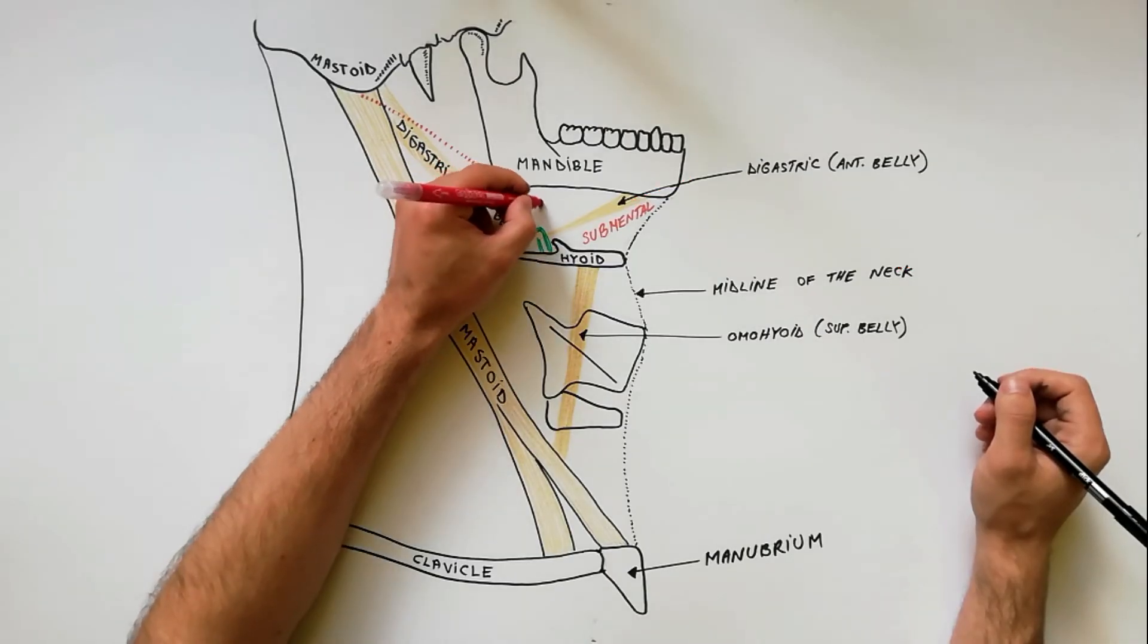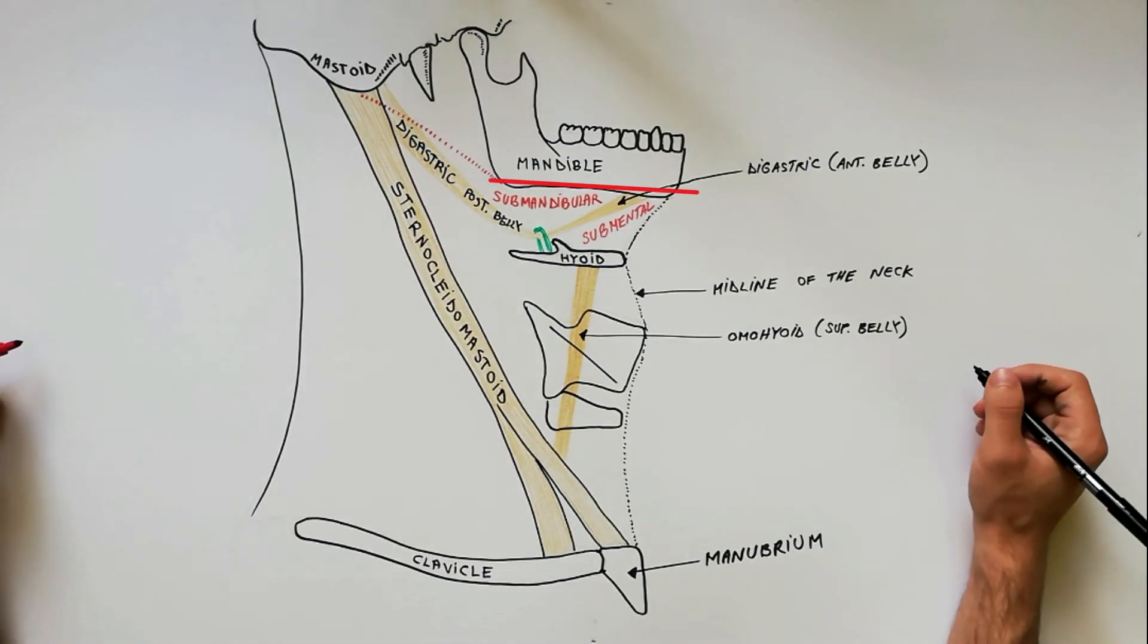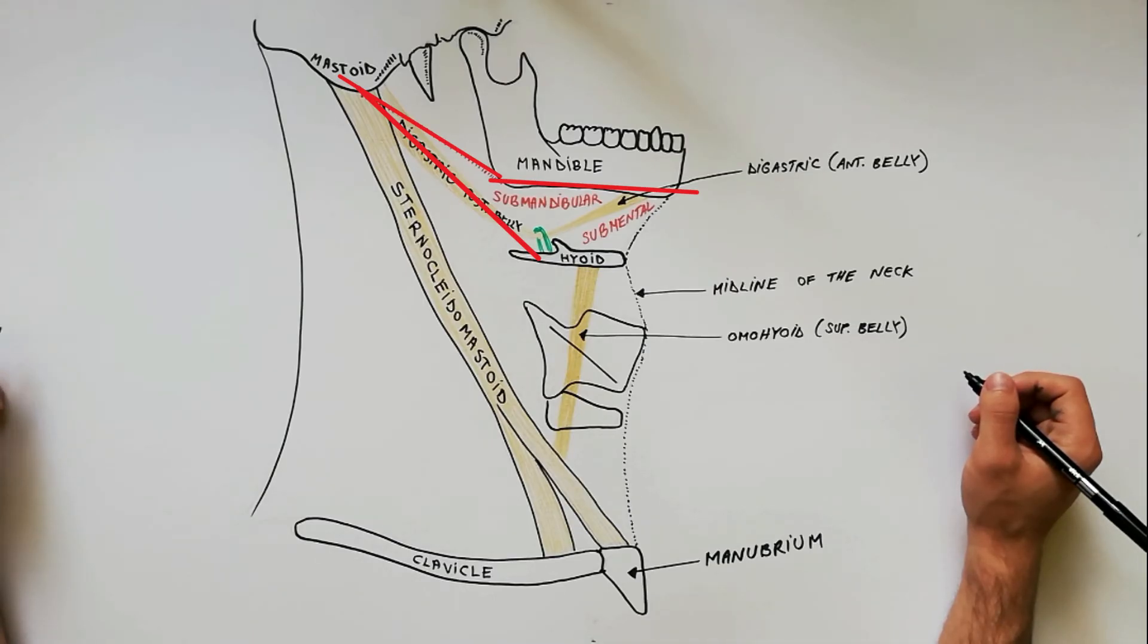The submandibular triangle is bounded above by the lower border of the body of the mandible and the line drawn from its angle to the mastoid process, below by the posterior belly of the digastricus, and in front by the anterior belly of the digastricus.